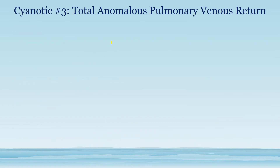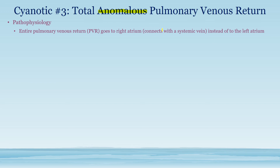Our next cyanotic heart disease is total anomalous pulmonary venous return. Pulmonary venous return is blood that comes from the lung and goes to the left heart, specifically the left atrium, to supply oxygenated blood to the rest of the body. When it says it's anomalous, that means the pulmonary venous return is not going to the right place — instead of going to the left atrium, it connects to the systemic vein and goes to the right atrium.